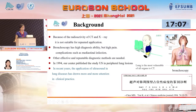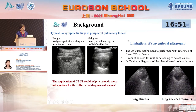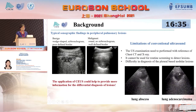So other effective and repeatable diagnostic methods are needed. In 1994, our center first published a study about ultrasound in peripheral lung disease. In recent years, the application of ultrasound in lung disease has drawn more and more attention in clinical practice. The sonographic findings in peripheral lung disease are often very clear — we can see benign versus malignant — but sometimes pleural-based nodular lesions look very similar. So we hope contrast ultrasound could help provide more information for differential diagnosis of lung disease.